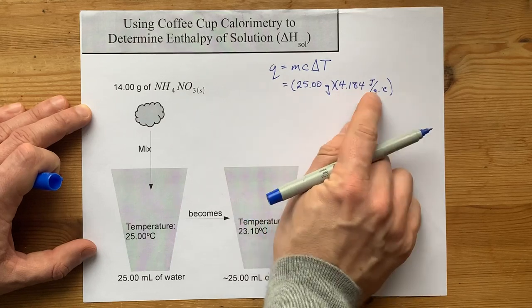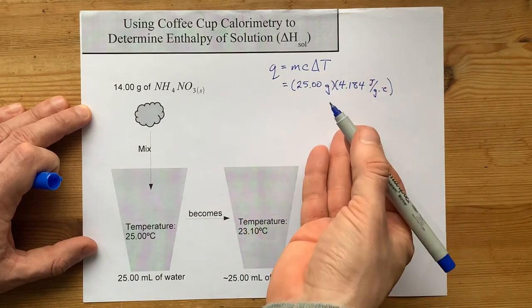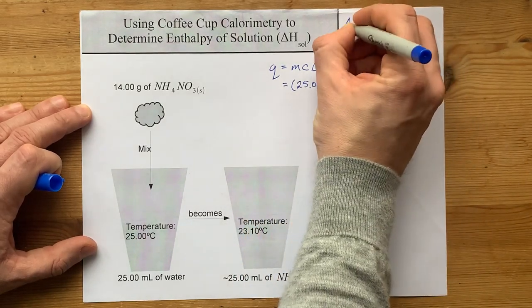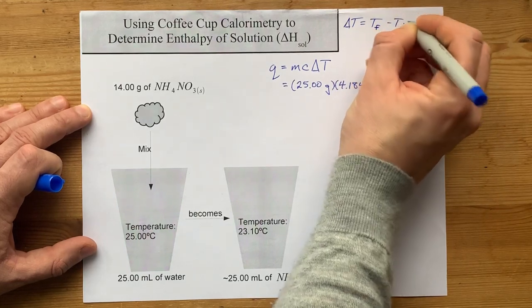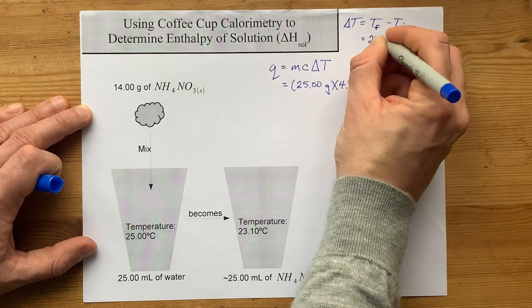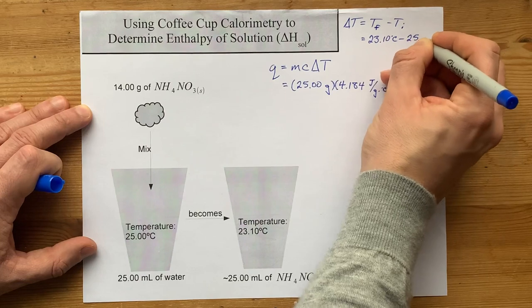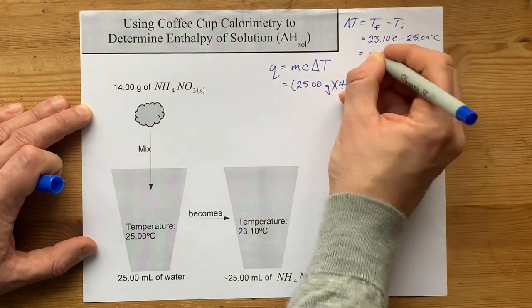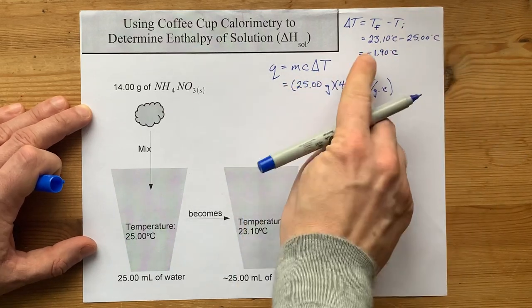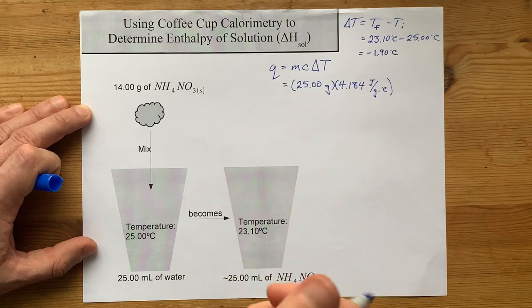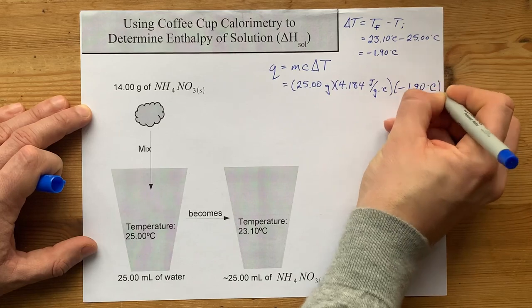And then we need the delta T, or the change in temperature. I actually don't have that. Delta T is your T final minus your T initial. My final temperature was 23.10 degrees Celsius. My initial temperature was 25.00 degrees Celsius. When I subtract those, I end up with negative 1.90. It is negative because the temperature went down. So I'm going to plug that in here, negative 1.90 degrees Celsius.